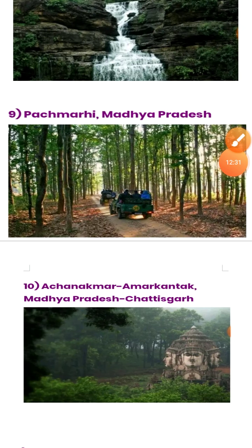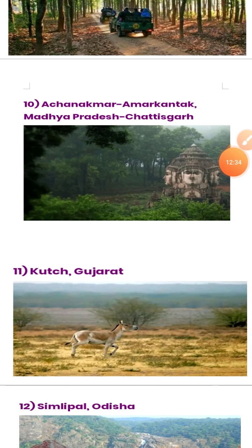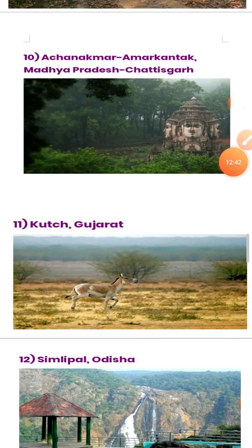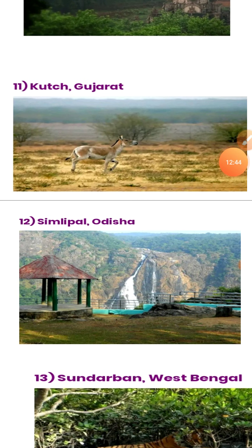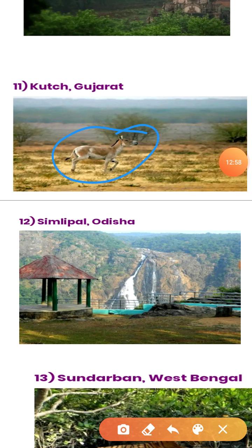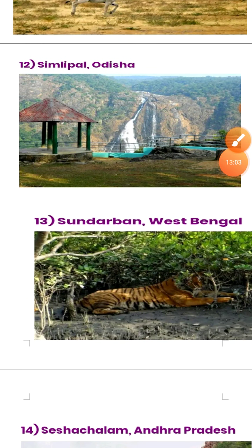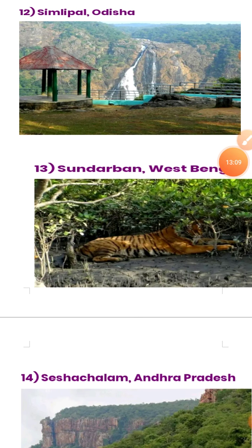Ninth: Pachmarhi in Madhya Pradesh. Tenth: Achanakmar-Amarkantak spanning Madhya Pradesh and Chhattisgarh. Eleventh: Kutch in Gujarat — also famous for the wild ass. Twelfth: Simlipal in Odisha. Thirteenth: Sundarbans in West Bengal, very important for the Royal Bengal Tiger.